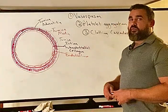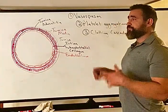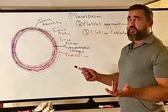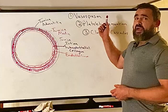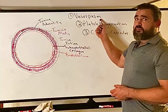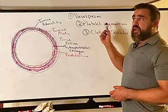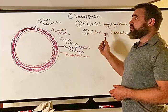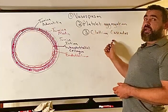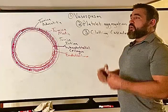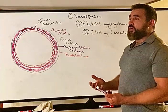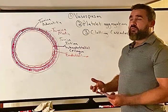This is a video on blood clotting. There are three main steps of blood clotting: vasospasm, platelet aggregation, and the clotting cascades. To talk about that, we need to know about how blood flows and the blood vessel layers.